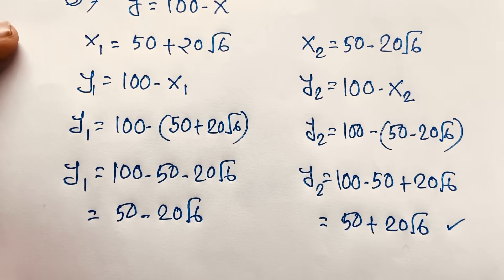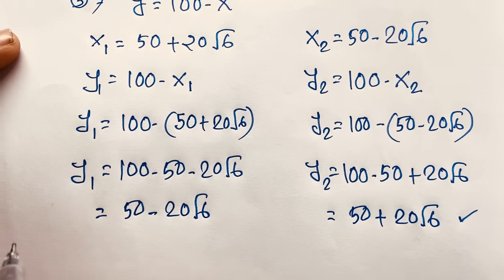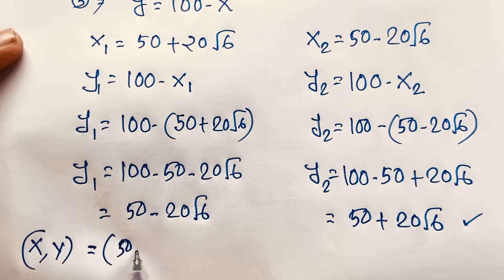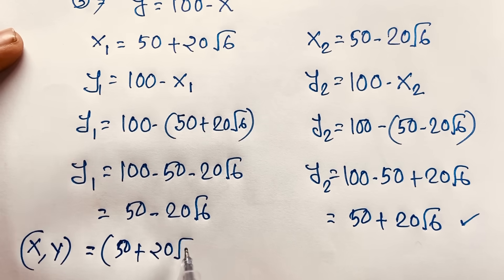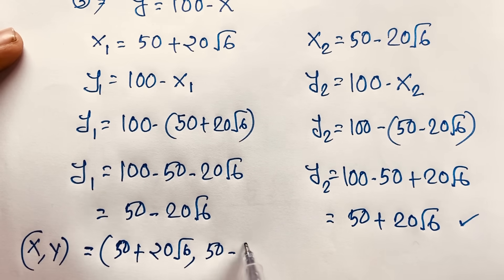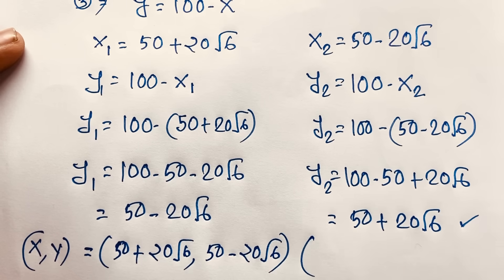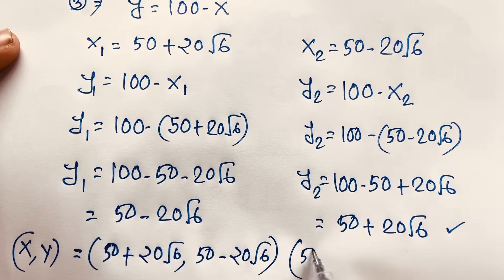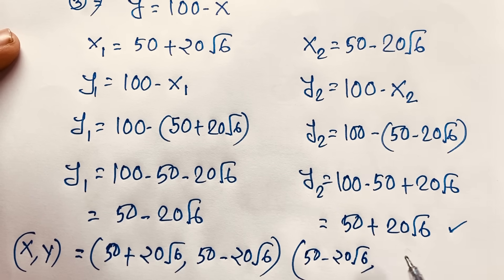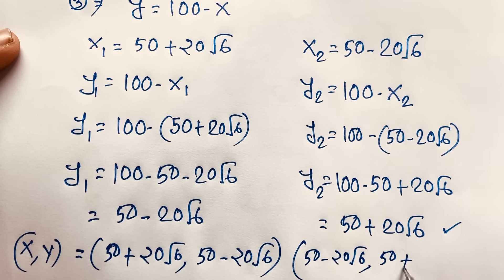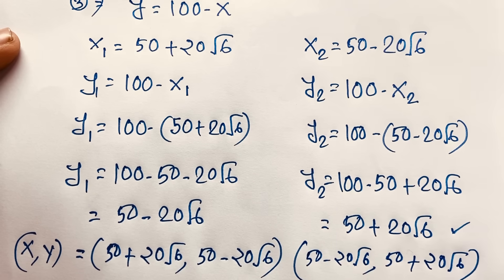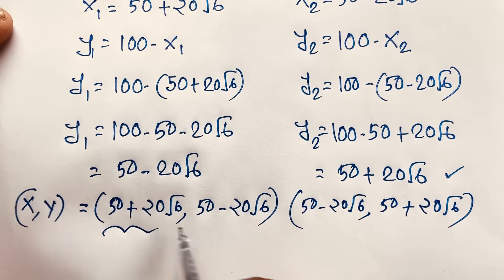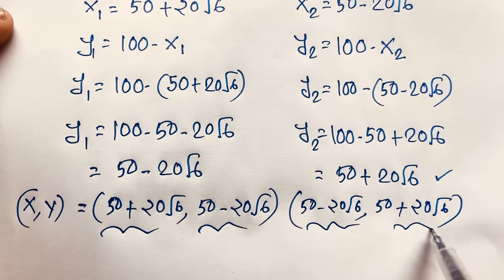So we find our final answer: when x is equal to 50 plus 20 square root of 6, y is equal to 50 minus 20 square root of 6; and when x is equal to 50 minus 20 square root of 6, y is equal to 50 plus 20 square root of 6. This is our final answer in this Math Olympiad question. Both are real solutions — x and y — with no complex numbers.